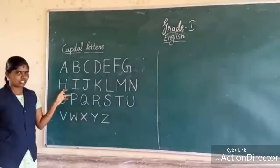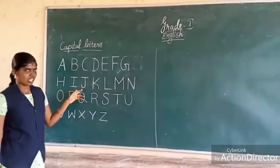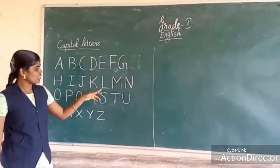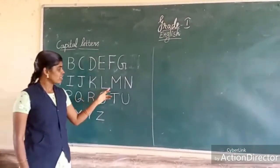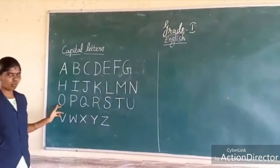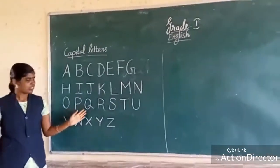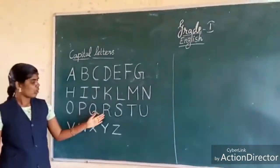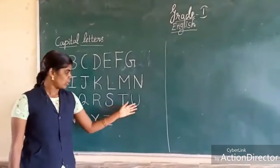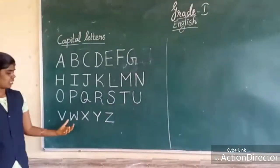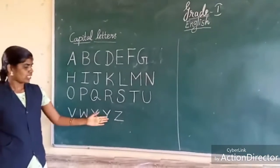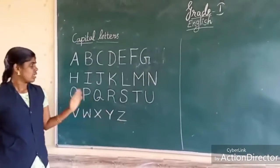H, I, J — repeat me — K, L, M, N, O, P, Q, R, S, T, U, V, W, X, Y, Z. Now we are going to see how to write these letters.